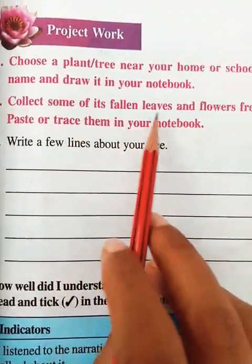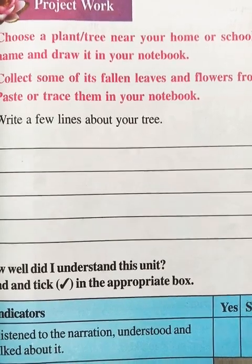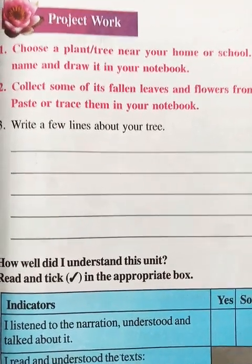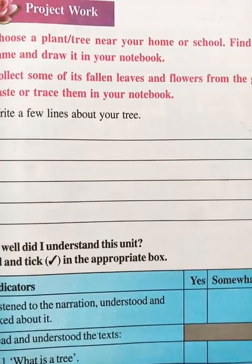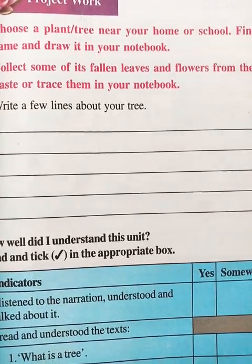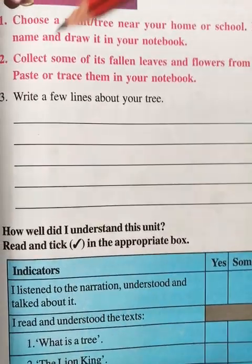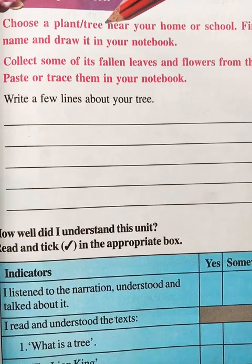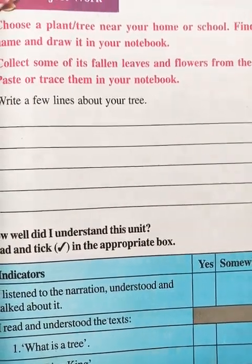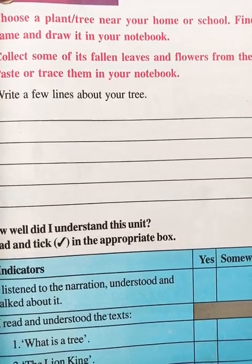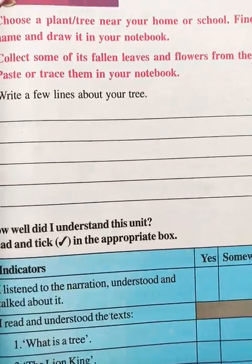Collect some fallen leaves and flowers from the ground. We get flowers and leaves under the trees - they fall when the wind is heavy or there is a storm, or when it rains. Pick up and collect those leaves and flowers from the ground. Paste them in your notebook along with the drawing of the plant or tree. Draw it on one page, then collect the fallen leaves and flowers and paste them, and write a few lines about your tree.